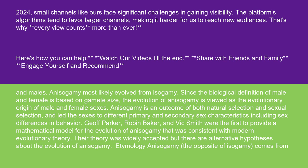Anisogamy is an outcome of both natural selection and sexual selection, and led the sexes to different primary and secondary sex characteristics, including sex differences in behavior. Jeff Parker, Robin Baker, and Vic Smith were the first to provide a mathematical model for the evolution of anisogamy consistent with modern evolutionary theory. Their theory was widely accepted, but there are alternative hypotheses about the evolution of anisogamy.